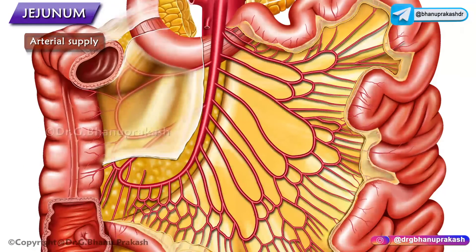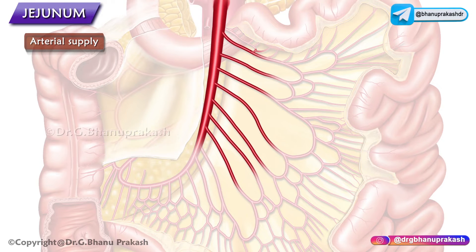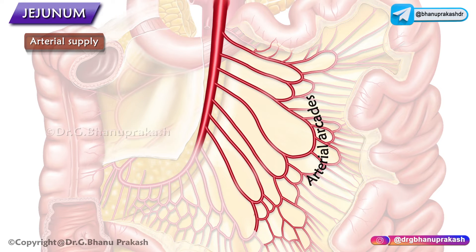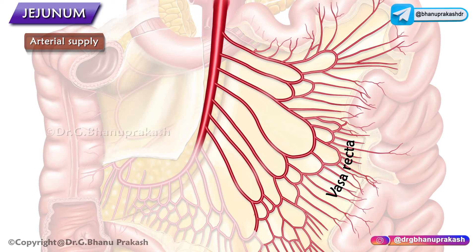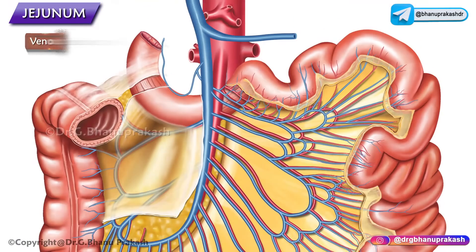The superior mesenteric artery runs between the layers of the mesentery and gives off multiple branches to the jejunum. These jejunal arteries unite to form loops or arches called arterial arcades, which give rise to straight arteries called vasa recta. In the jejunum, there are one or two arterial arcades with fewer and longer vasa recta.